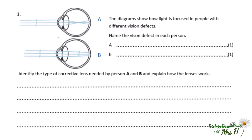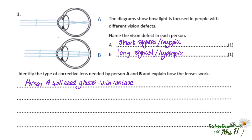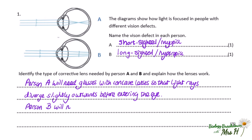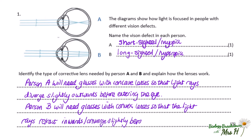Let's practice an exam question. The diagrams show how light is focused in people with different vision defects. Name the vision defect in each person. In person A, the light rays converge too soon to a focus point, so this person is short-sighted or has myopia. In person B, the rays converge behind the retina, so this person is long-sighted or has hyperopia. Next part: identify the type of corrective lens needed by person A and B, and explain how the lenses work. Person A will need glasses with a concave lens, so that light rays diverge slightly outwards before they enter the eye. Person B will need convex lenses in their glasses, so that the light rays refract inwards, or converge slightly, before they enter the eye.